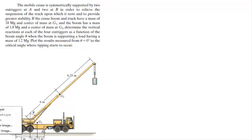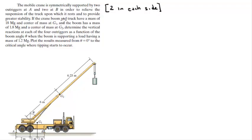Let me make a quick note of that: two on each side, two in the front and two in the back, so four total, in order to relieve the suspension of the truck upon which it rests and to provide greater stability. If the crane boom and the truck have a mass of 18 megagrams at G1 and 1.8 megagrams at G2, find the vertical reactions on each of the four out-triggers as a function of theta when the boom is supporting a load of 1.2 megagrams.